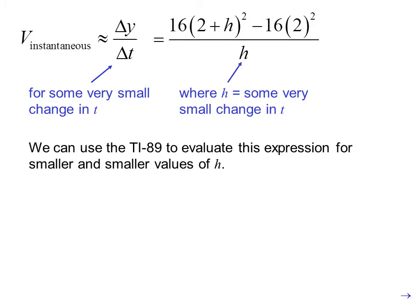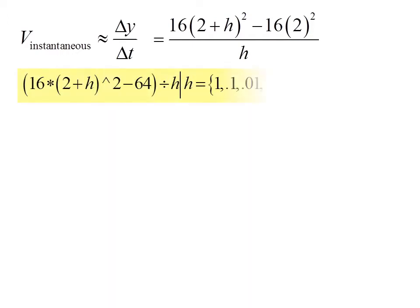We can use the TI-89 to evaluate this expression for smaller and smaller values of h. We enter 16 times the quantity (2 plus h) to the second power minus 64, divided by h.